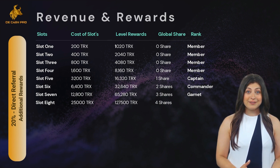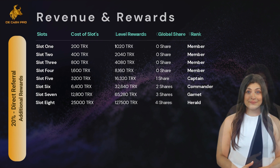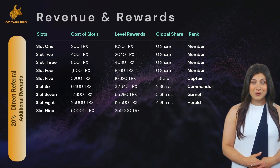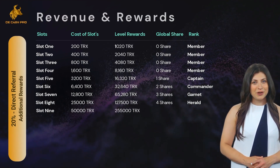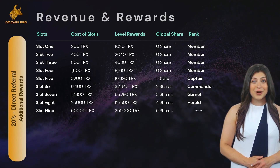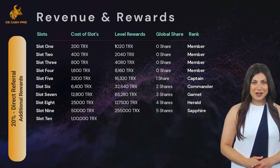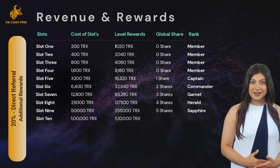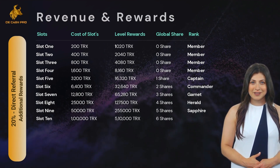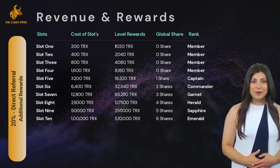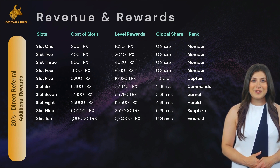Slot 9 costs 50,000 TRX with 255,000 TRX rewards and 5 shares, earning Sapphire rank. Slot 10 costs 100,000 TRX with 510,000 TRX rewards and 6 shares, earning Emerald rank. From slots 5 through 10, you gain one share per slot. From Slot 11 onward, your global founder shares become double. Slot 11 costs 200,000 TRX with 1,020,000 TRX rewards and 8 shares, earning Oxy's Relic rank.